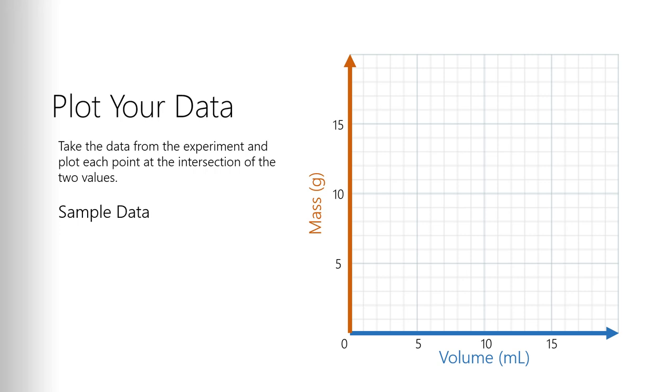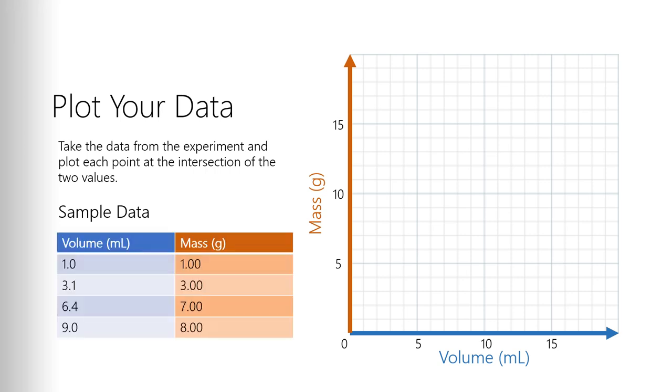Now we're going to plot our data. So let's get some sample data. Here's some sample data. Now I color-coded it, the volume in blue and the mass in orange, so you know it all fits together. All we want to do is we want to put this data on the graph, right? Put this data on the graph in the same position that it would be in the experiment.